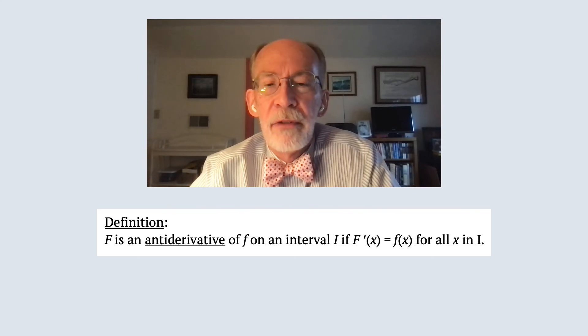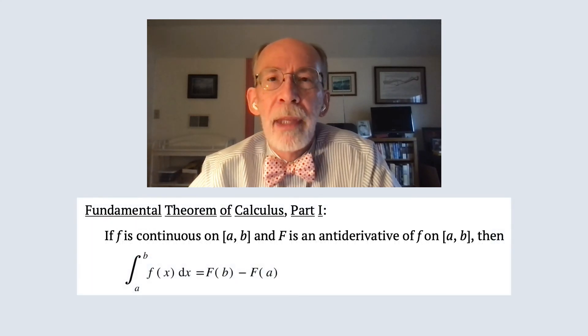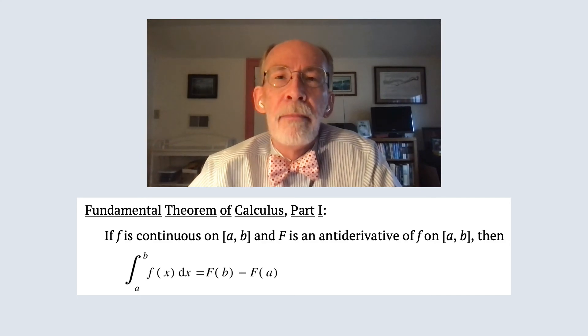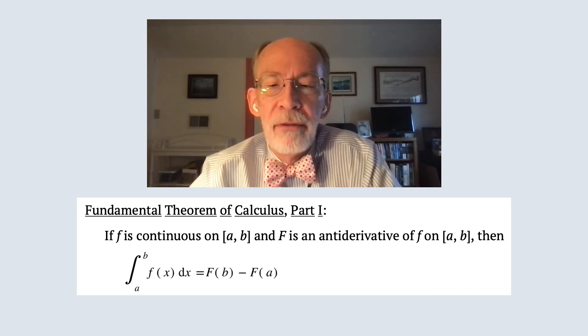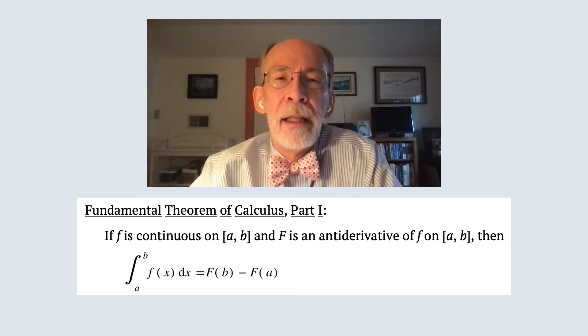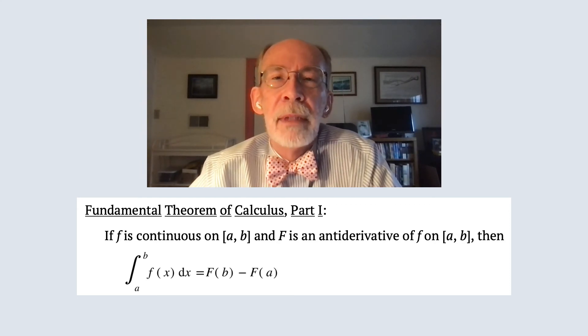Now that we know what an antiderivative is, here is part one of the fundamental theorem. If f, little f, is continuous on closed [a,b], and big F is an antiderivative of little f on closed [a,b], so for all x in closed [a,b], then the integral from a to b of little f of x dx equals big F of b minus big F of a.